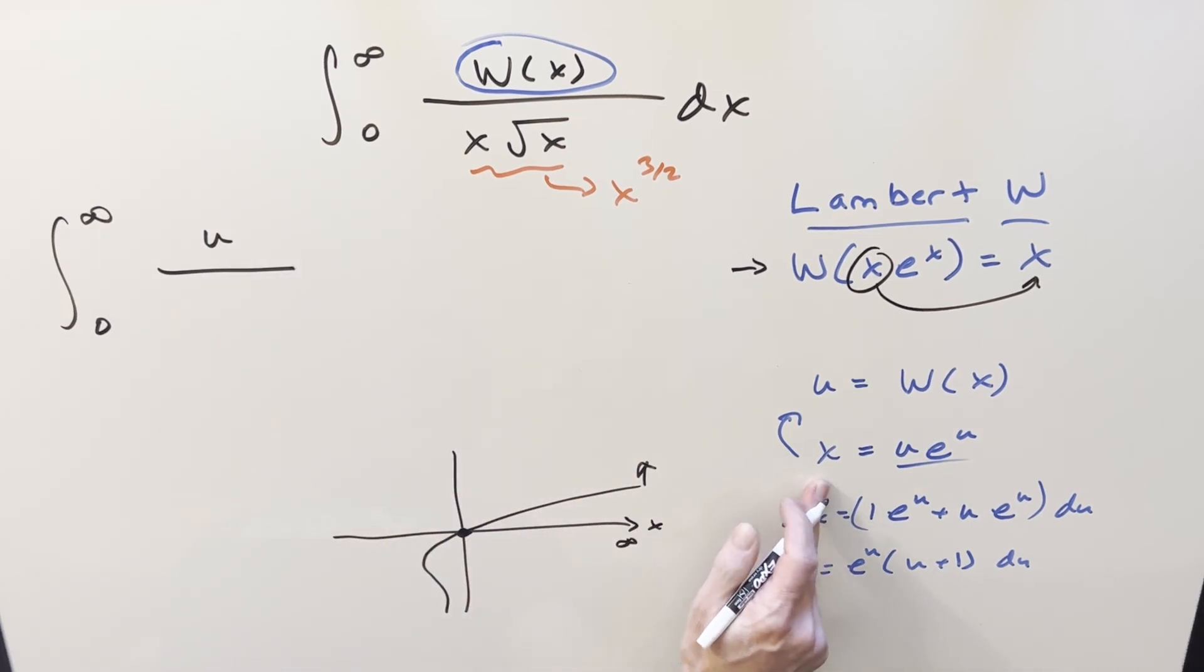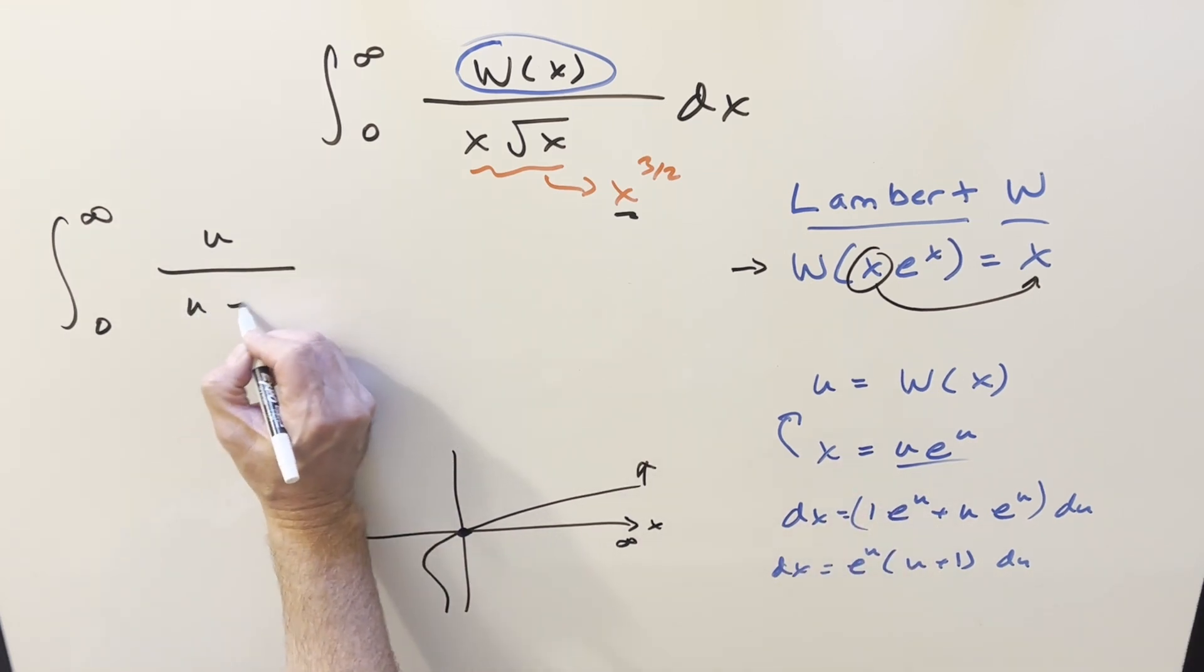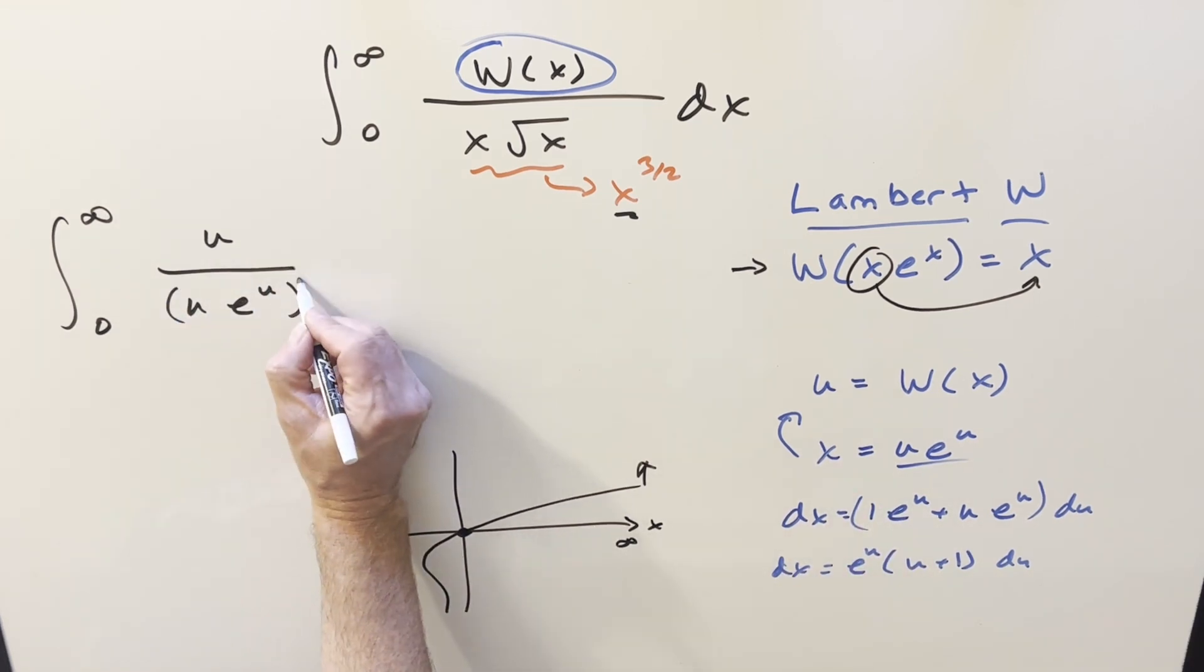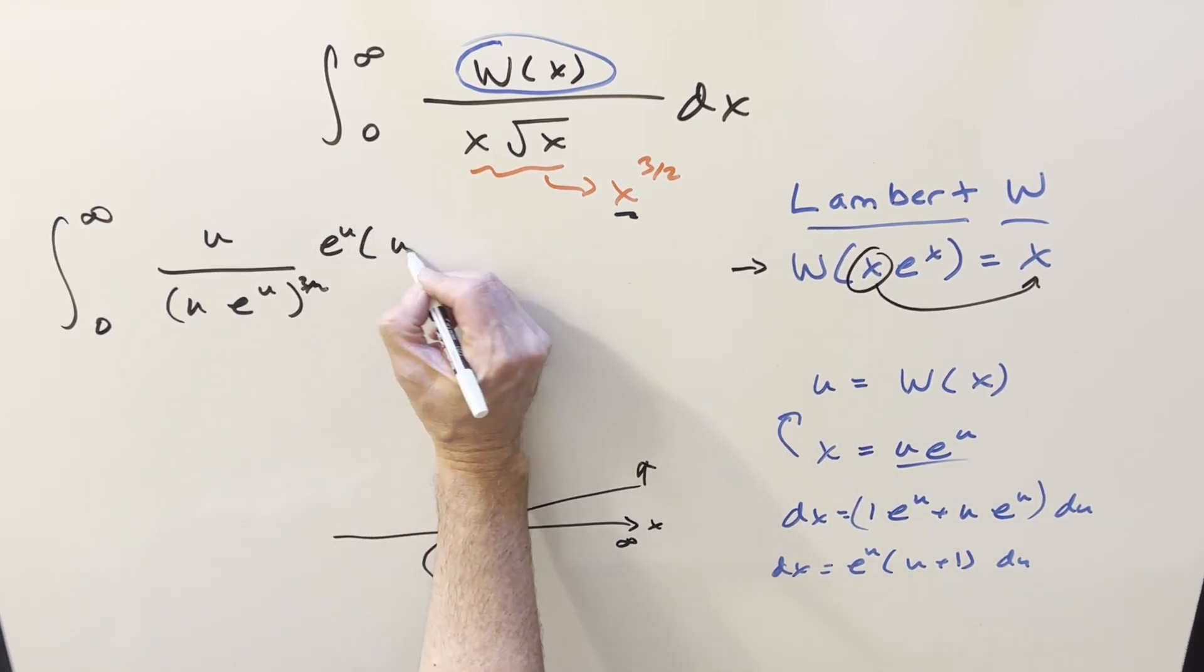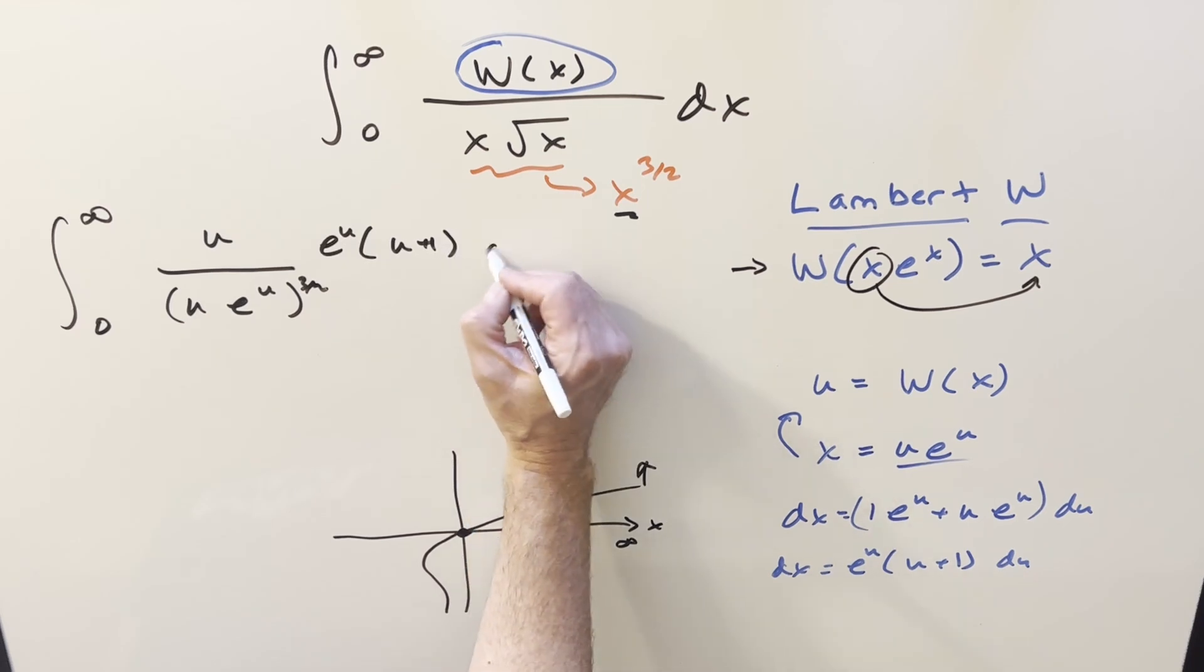Now we substituted u for Lambert W. This is going to become u here. Our x value is this. Let's use this interpretation, x to the 3 halves. So we have u e to the u all to the 3 halves. And then for dx, we're going to have e to the u times u plus 1, du.